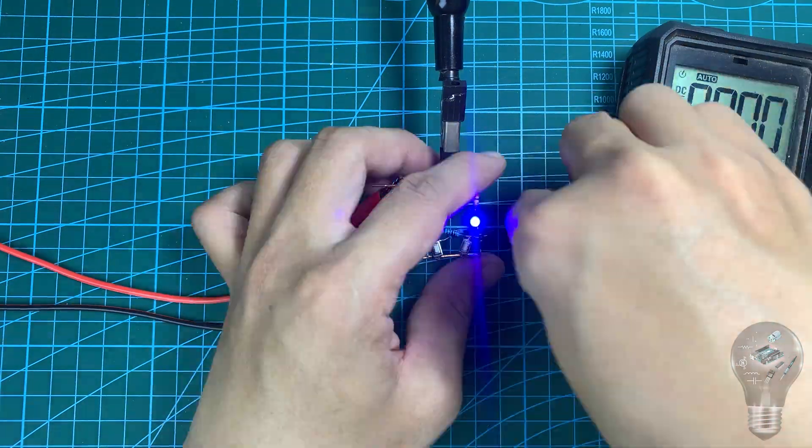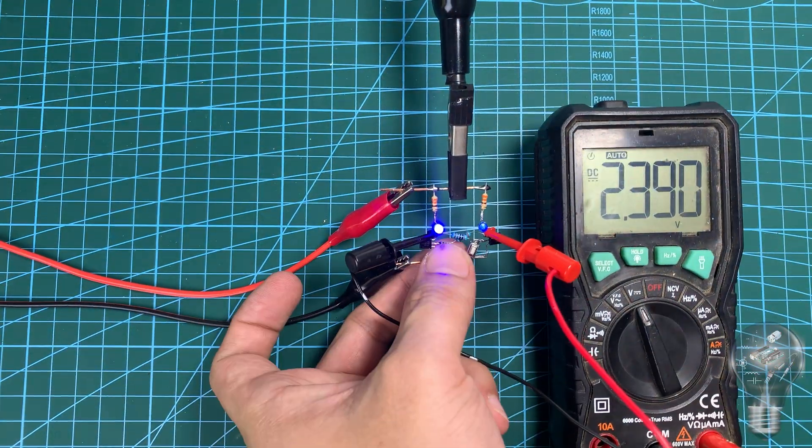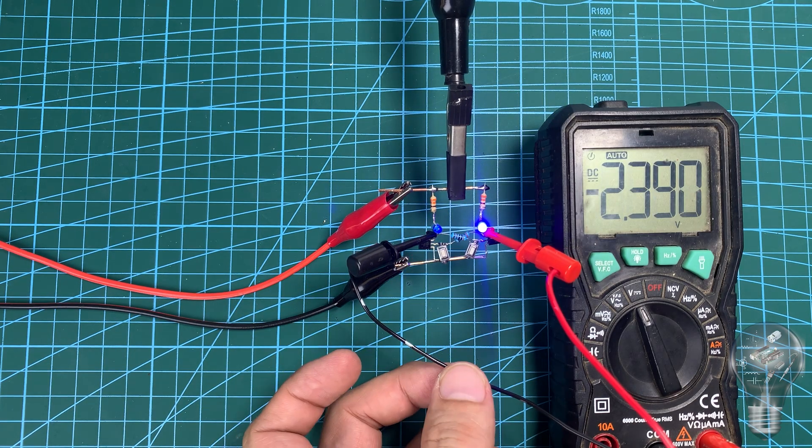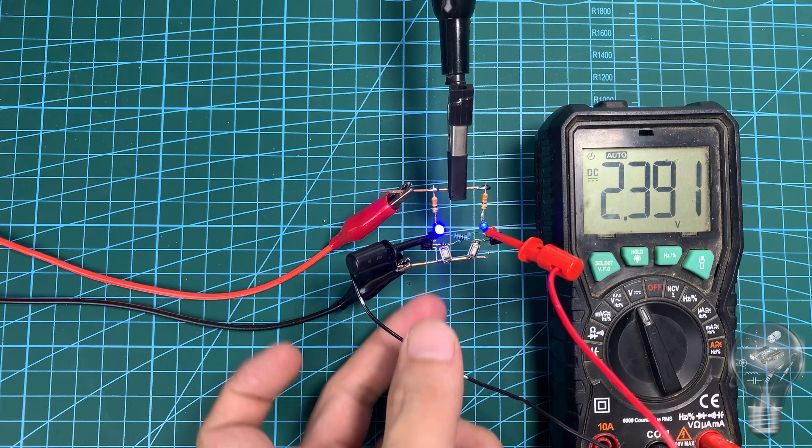Specifically, let us try to measure the voltage between the two collector pins of the two transistors. The result shows that the voltage is about 2.4 volts, and it will reverse every time we press the button.